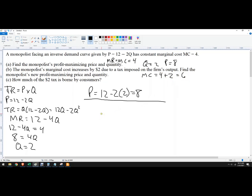So do the same thing. We're going to set marginal revenue equal to 6 this time. So we've got 12 - 4Q = 6, and then Q equals 1.5 this time. So we've decreased the quantity. That makes economic sense.